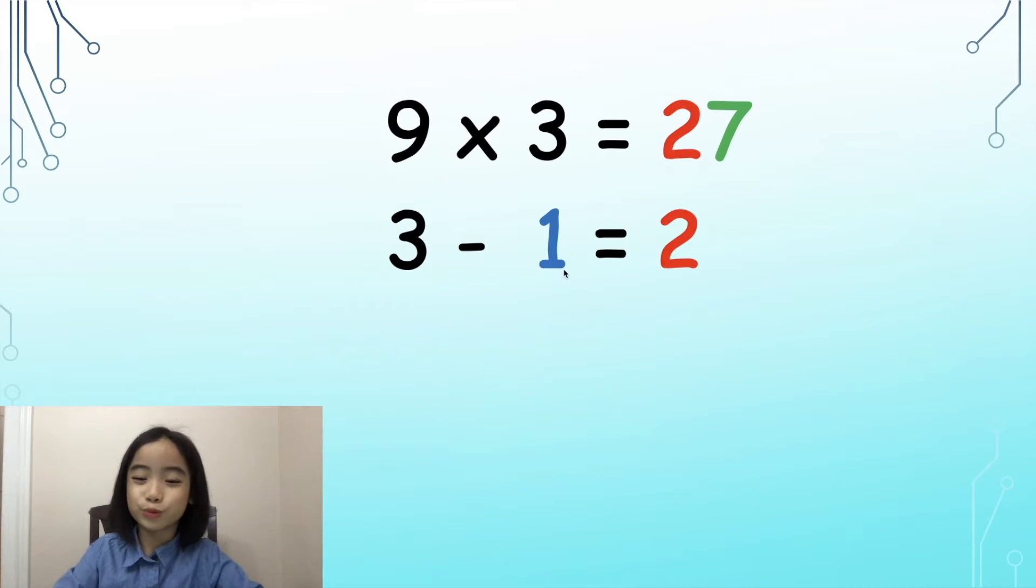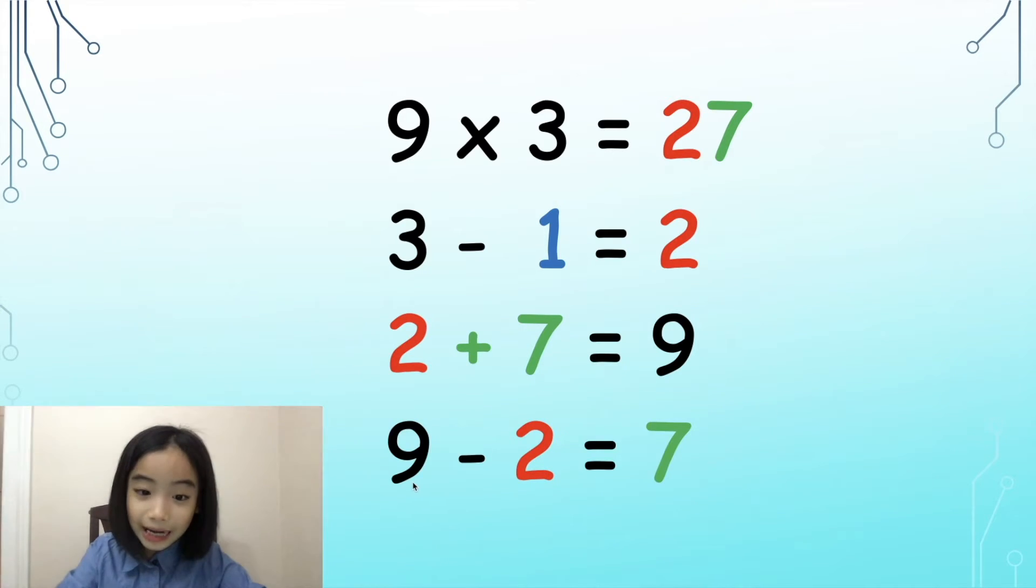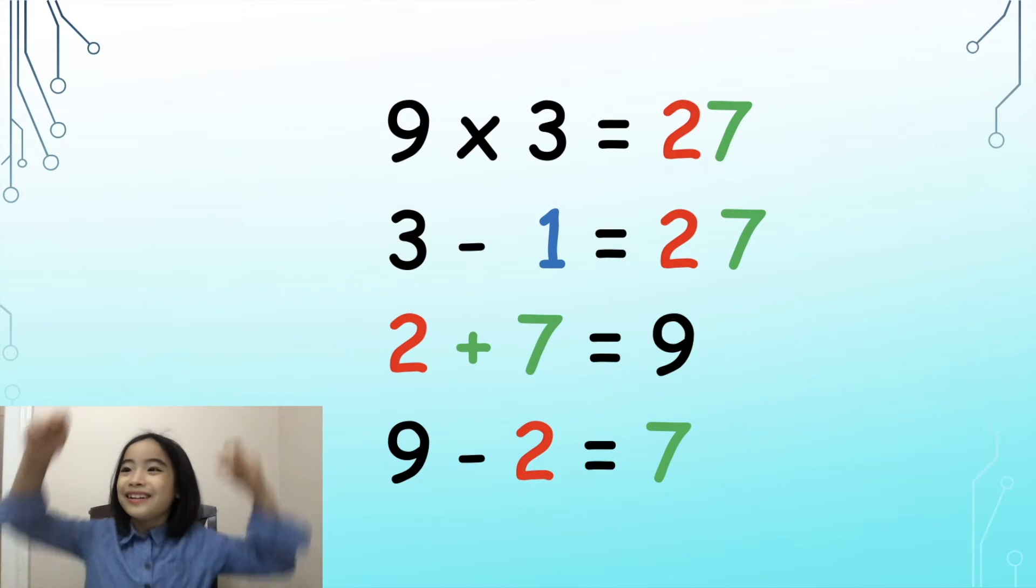3 minus 1 equals 2. We put the 2 in the tens position. 2 plus 7 equals 9. So, 9 minus 2 equals 7. So, we write the 7 in the ones position. This is a lot faster! Yay!